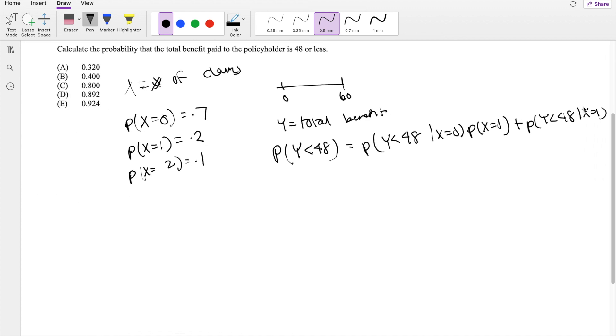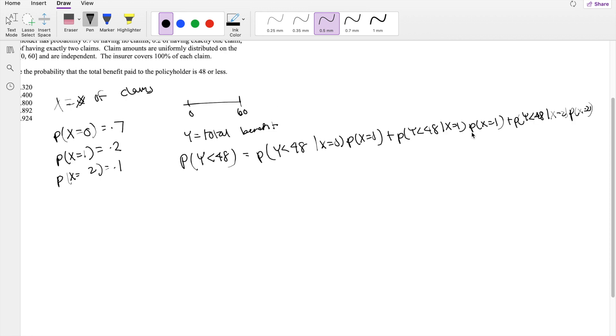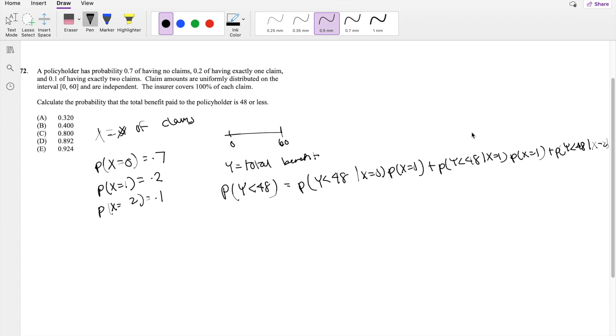So if there are no claims, what is the probability that total benefit is less than 48? Well, given that there is no claim, the total benefit is always going to be less than 48, because the insurance is going to always pay 0. So this one is just going to be 100%, times the probability that x is equal to 0, so that's 0.7.